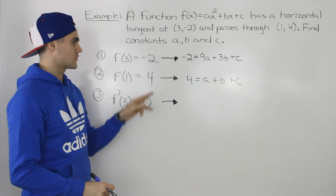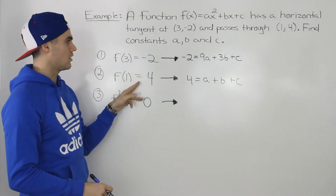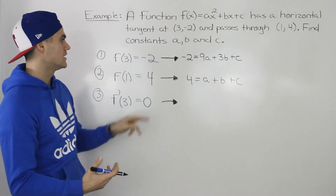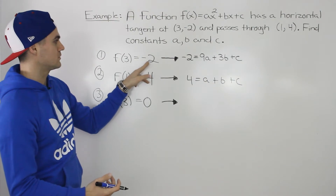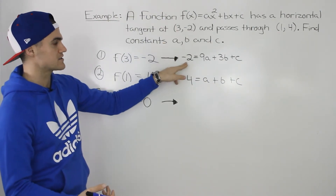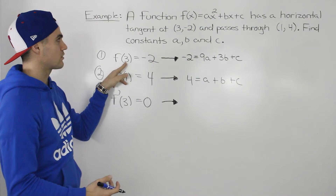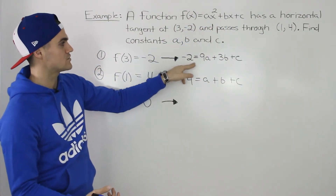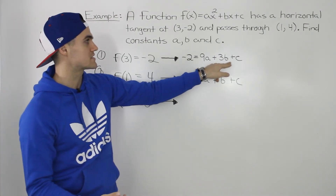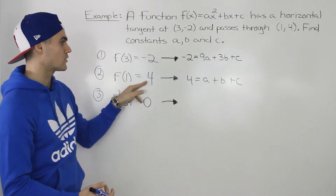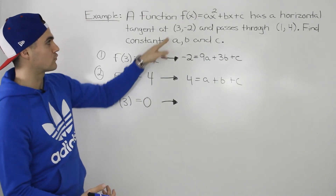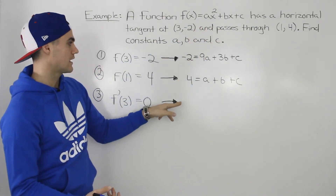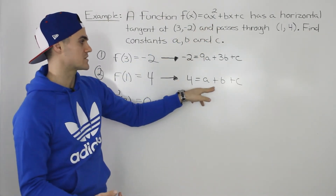Making equations for the first two is pretty easy. We use f(x) = ax² + bx + c. For f(3) = -2, we plug in -2 for f(x) on the left side and plug in 3 for all the x's on the right side, giving us negative 2 equals 9a plus 3b plus c. For f(1) = 4, we plug in 4 for f(x) and 1 for all x values, giving us 4 equals a plus b plus c.